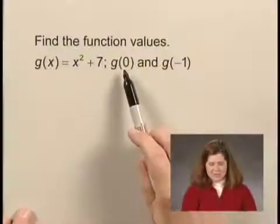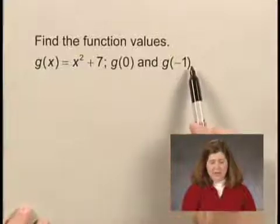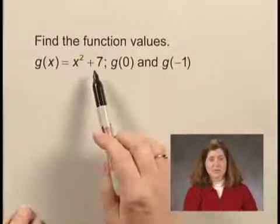We'll now find some function values. We'll find g of 0 and g of negative 1 when g of x is x squared plus 7.